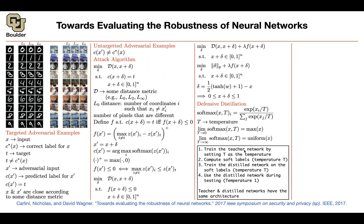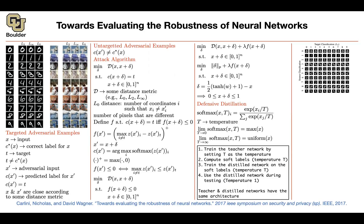Defensive distillation was able to make the network more robust against the types of attacks we saw in the previous two papers. But here we see that you can find adversarial examples even for networks trained using defensive distillation, using this new algorithm. In the results figure: the source classification and the chosen target are shown, and if your norm is L2, you can make your network incorrectly classify a zero as a one, two, or three.